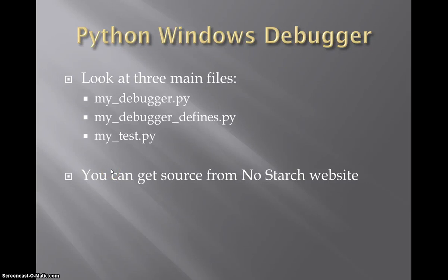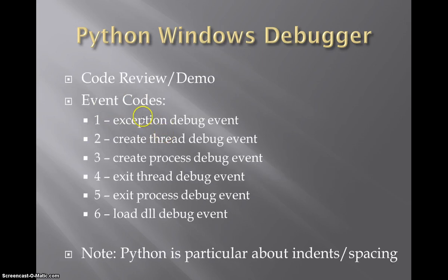Welcome back. This is part two of my video series, and we're going to pick up here looking at the Windows debugger files: my debugger, my debugger defines, and my test. I'm going to look at the code and then do a short demo. One thing to keep in mind as we're going through this is these event codes.